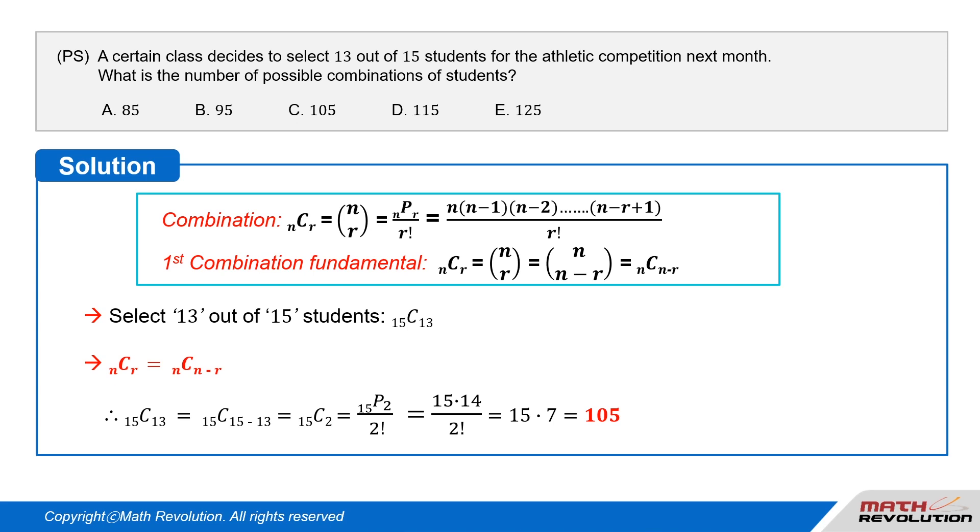15 choose 2 equals 15P2 over 2 factorial, which equals 15 times 14 over 2 factorial, which equals 15 times 7, which equals 105.